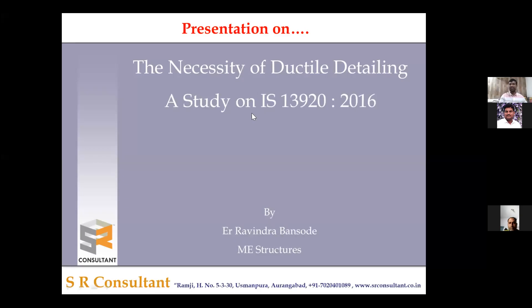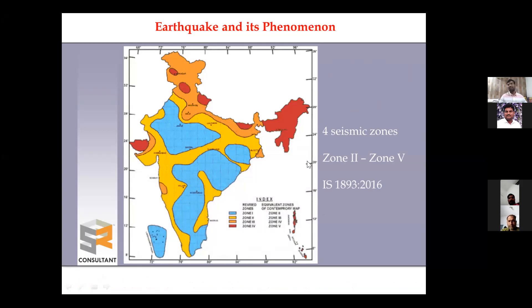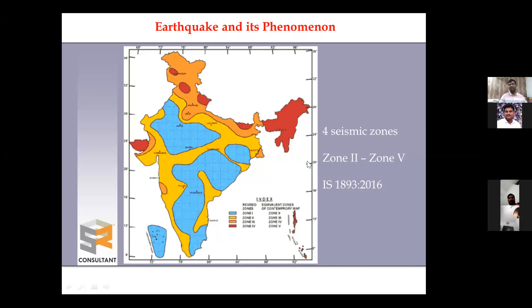The details related to seismic zones will be covered, then we will transfer to the ductility detailing of the structure. The entire country is divided into 4 seismic zones. Previously, before the Latur earthquake, there were 5 zones — zone 1 to zone 5 — and people from Maharashtra were in zone 1. After the interplate earthquake of Latur, zone 1 was terminated and zone 1 people were directly shifted to zone 2. The country is mainly divided into zone 2 and zone 3, with zone 4 and zone 5 covering a very small area.